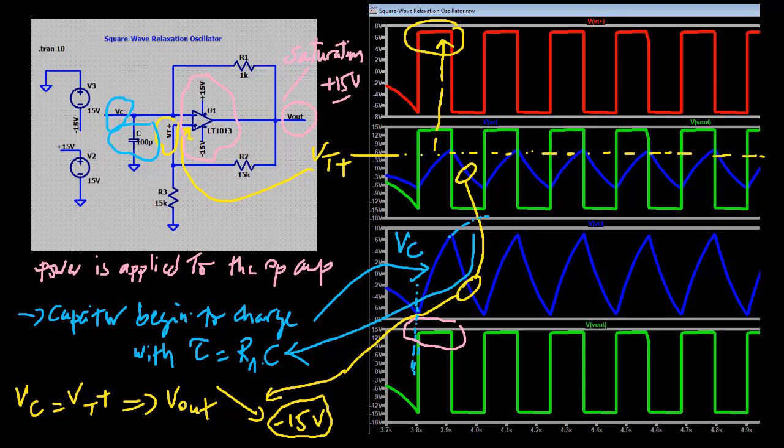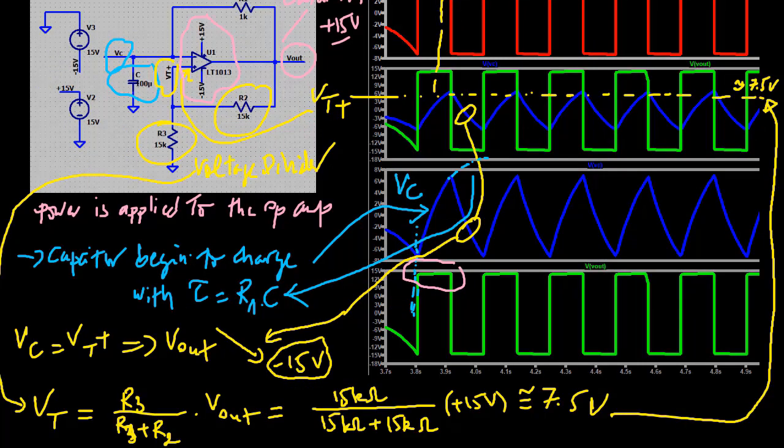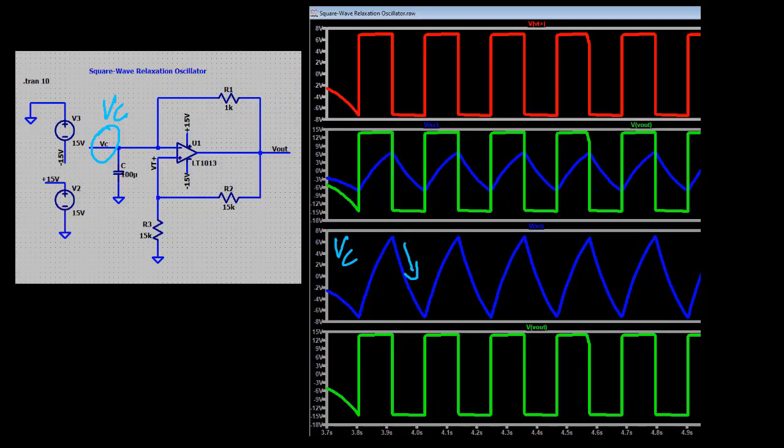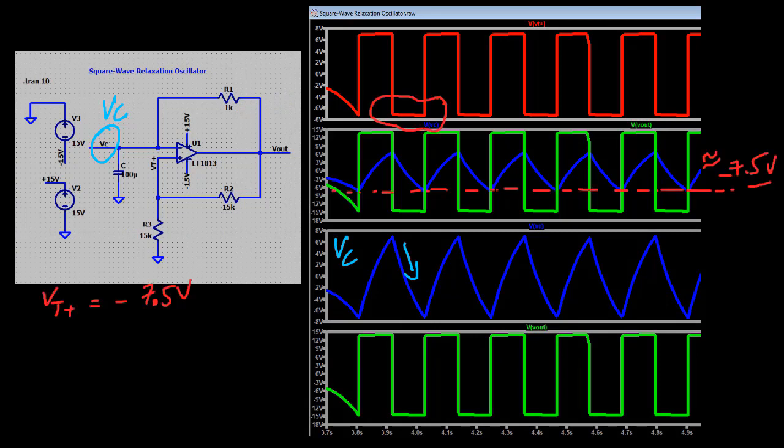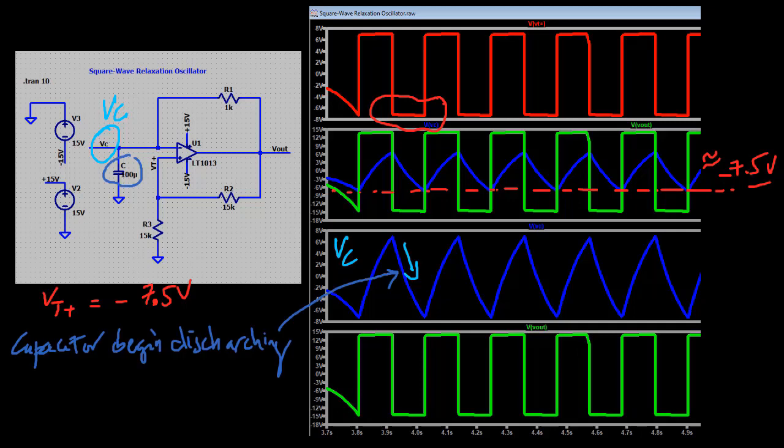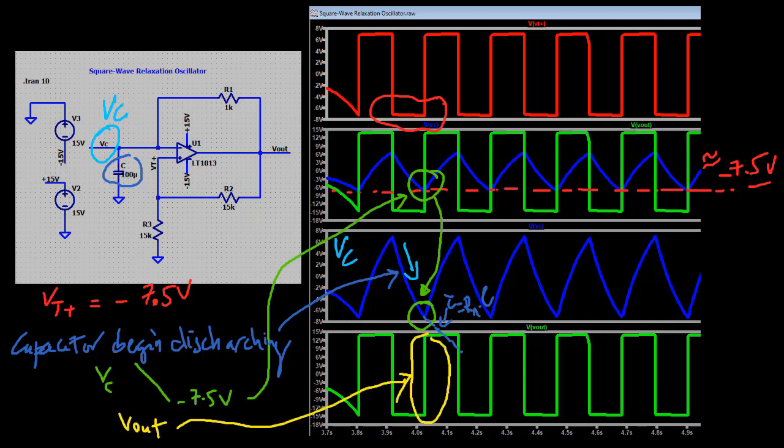The threshold voltage is the voltage set at the non-inverting input. The threshold voltage set by the voltage divider is now minus 7.5 volts. The capacitor begins discharging toward negative saturation with the same R1 times C time constant until it reaches minus 7.5 volts, at which time the op-amp's output switches back to the positive saturation voltage.